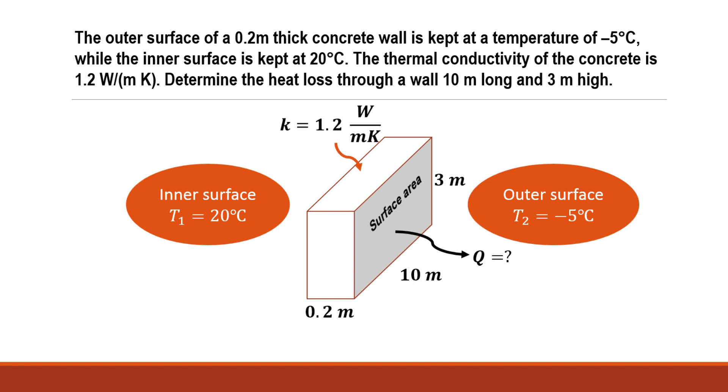The thermal conductivity of this concrete material is given as 1.2 W/(m·K). We will solve this example using the concept of thermal resistance. We have already seen the concept of thermal resistance for composite slabs in previous videos. We will use that concept here, applying the electrical analogy.